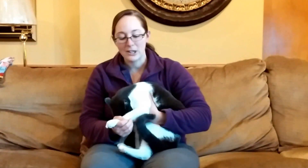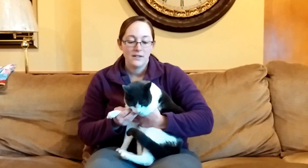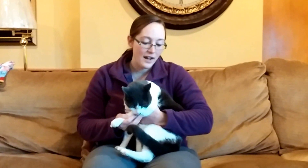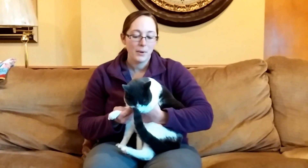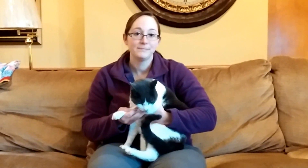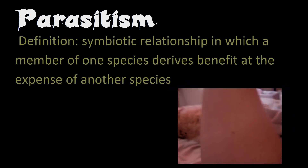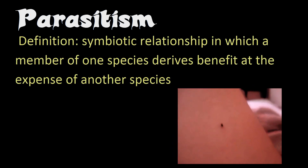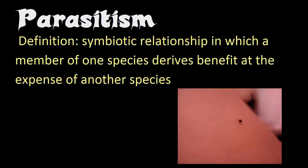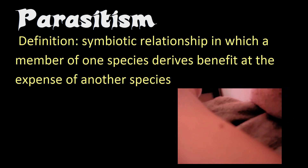Let's look at an example of parasitism — in the case of the flea and the household pet. This is Diesel. He's not really happy about sitting here, but he's going to allow us to talk about his potential fleas for the summer. Fleas and cats have a parasitic relationship because fleas need the cat's blood in order to survive. The cats don't need the fleas at all; they're nothing more than a nuisance.